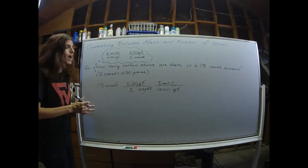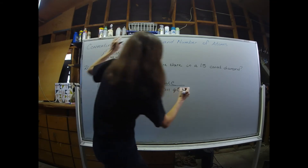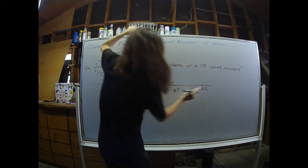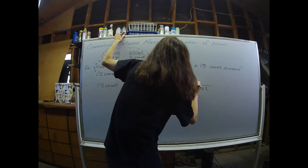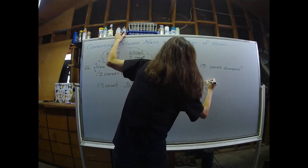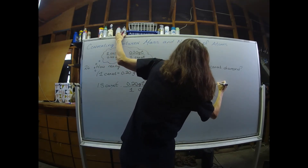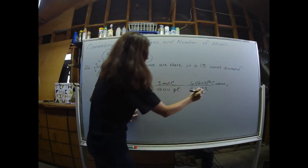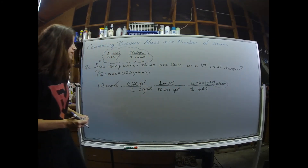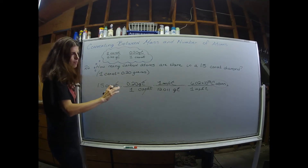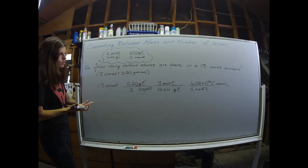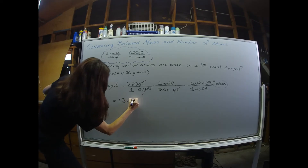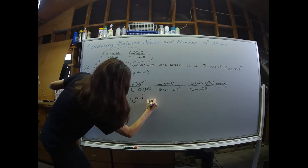For the last conversion factor, since we're asked for atoms, I'll use Avogadro's number: one mole of carbon in the denominator, with 6.02 times 10 to the 23rd carbon atoms in the numerator. Moles of carbon cancel with moles of carbon, leaving just carbon atoms. Multiplying all values on top and dividing by 12.011, I got 1.3 times 10 to the 22nd carbon atoms.